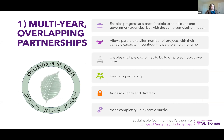The first adaptation is multi-year overlapping partnerships. This enables progress at a pace for small cities and government agencies that is feasible for them but with the same cumulative impact. It allows partners to align the number of projects with their variable capacity throughout the partnership timeframe — if they're very busy one semester they can do one project, and maybe the next semester collaborate on four or five. It also enables multiple disciplines to build on projects over time, and a longer partnership deepens relationships. However, it adds quite a bit of complexity — it's a dynamic puzzle with many interacting pieces.